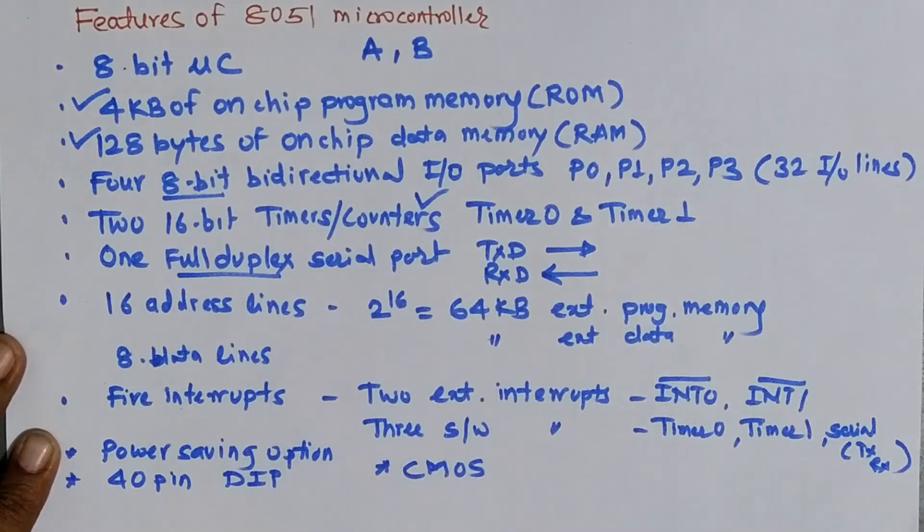Earlier microcontrollers were using NMOS technology for fabrication. But recent 8051 versions use CMOS that is complementary metal oxide semiconductor technology to fabricate it. And one of the major advantage of CMOS technology is that it reduces the power consumption. Because 8051 is mainly used in embedded systems which are battery operated. And in order to reduce the power consumption CMOS technology is ideal one.